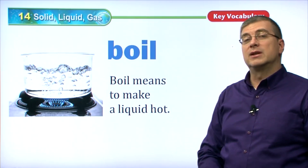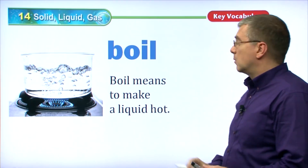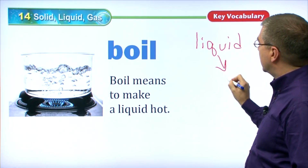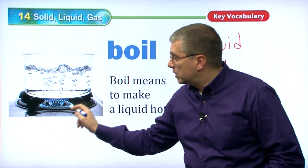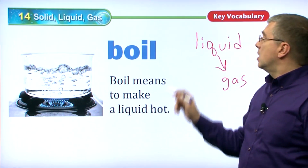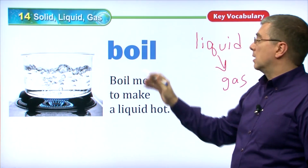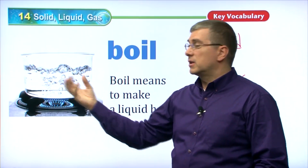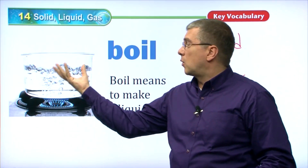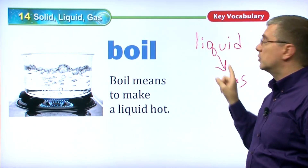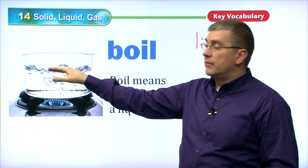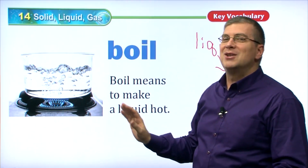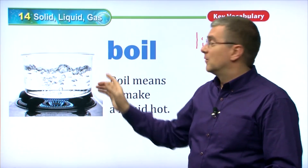Boil. Boil is another word similar to freeze and melt. When we talk about boil, we are going from a liquid to a gas. If we increase the temperature of something — give it heat — that liquid will eventually boil. Boil means to make a liquid so hot that gas forms in the liquid. The parts of the liquid become so far apart that they start to form a gas. The gas will come off the top of the liquid. If you keep that heat on, all of the liquid will change into a gas and disappear from the container.